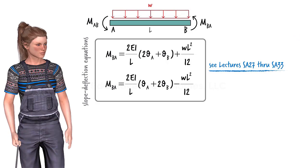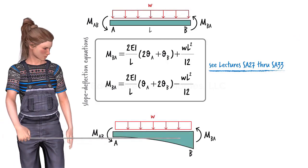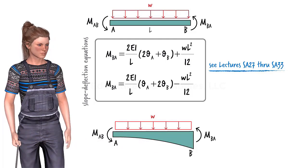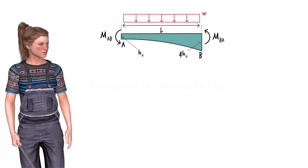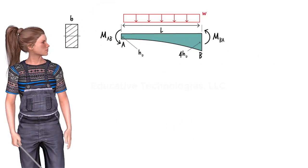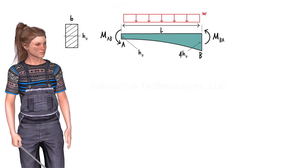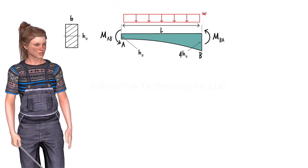However, here our beam segments are tapered, so the standard equations do not apply. If we assume a rectangular cross-section for the beam, then at the shallower end where the height is denoted by H0, the moment of inertia about the axis of bending can be written as shown.